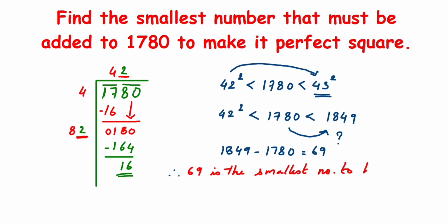Therefore, 69 is the smallest number to be added. When I add this number, 1780 plus 69 will give us 1849, and 1849 is a perfect square. When you find the square root of 1849, you will get the answer 43.